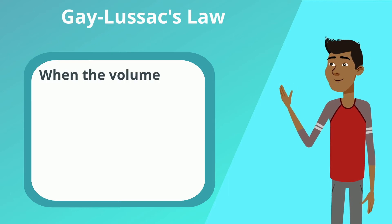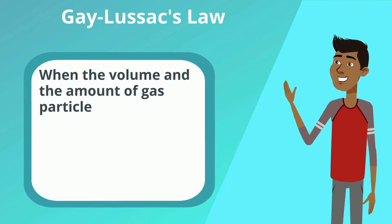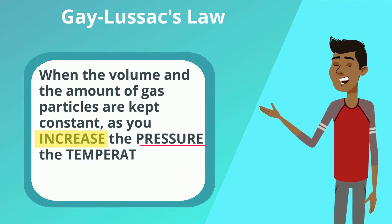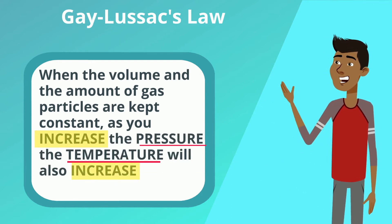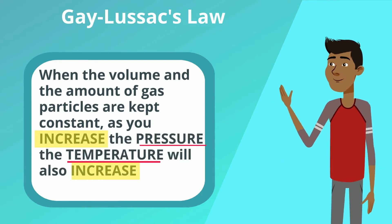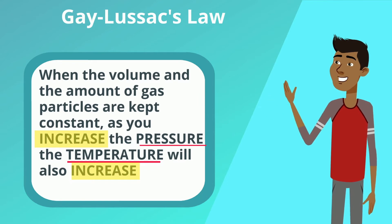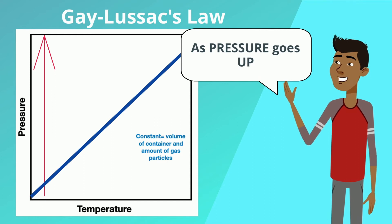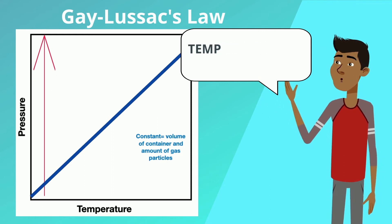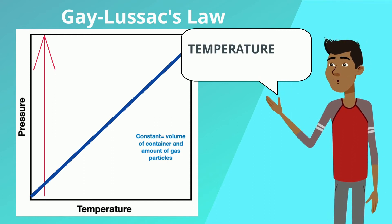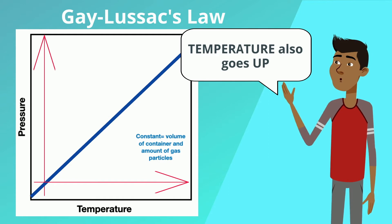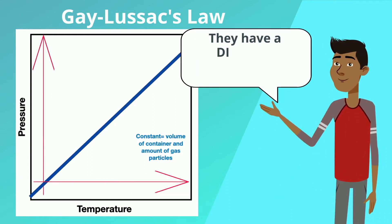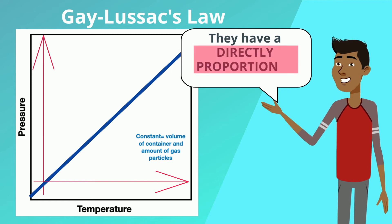Gay-Lussac's Law. When the volume and the amount of gas particles are kept constant, as you increase the pressure, the temperature will also increase. As you can see, as the pressure goes up, the temperature also goes up. They also have a directly proportional relationship.